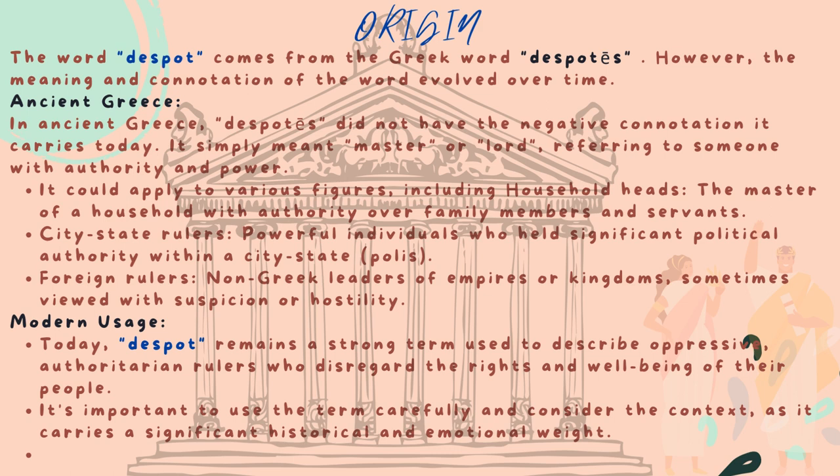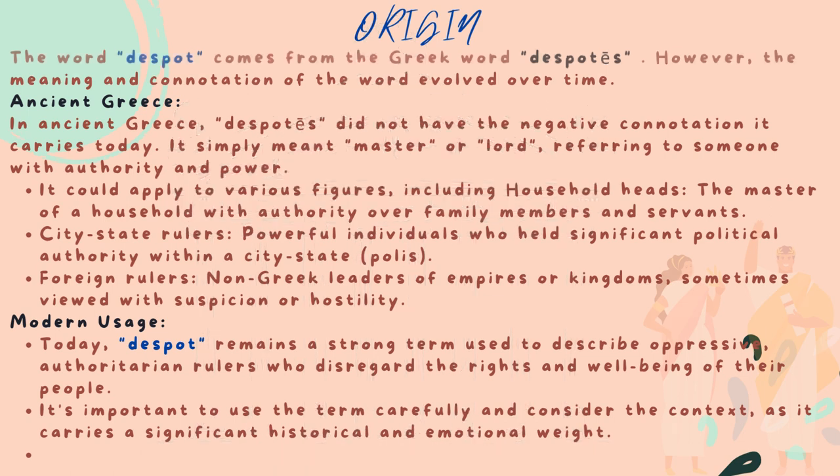Today, despot remains a strong term used to describe oppressive, authoritarian rulers who disregard the rights and well-being of their people. It's important to use the term carefully and consider the context, as it carries significant historical and emotional weight.